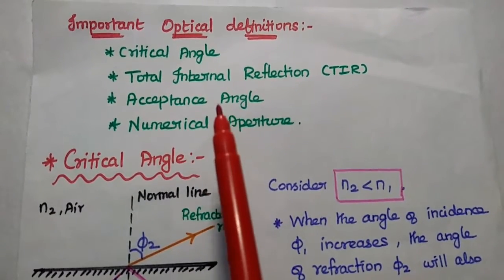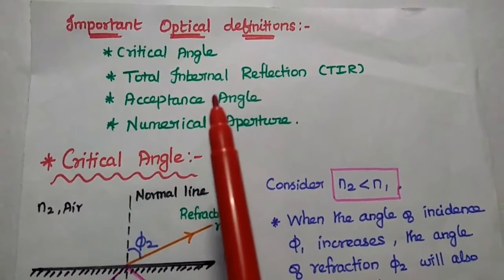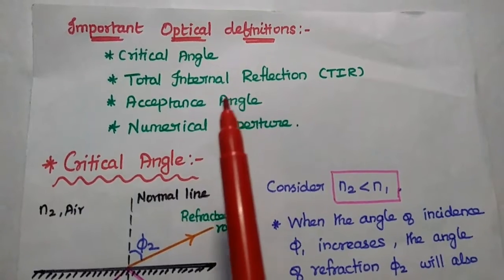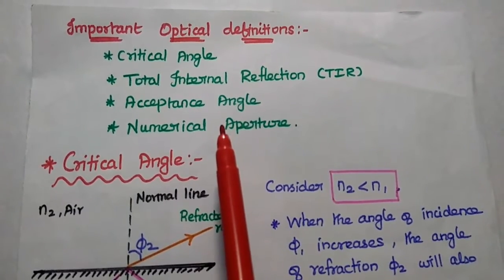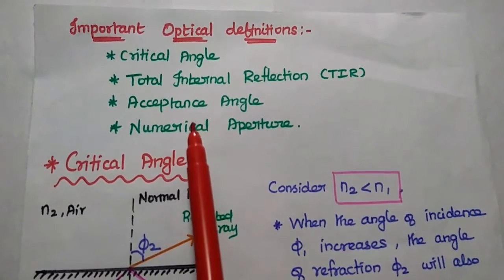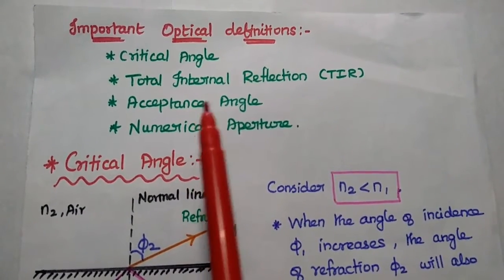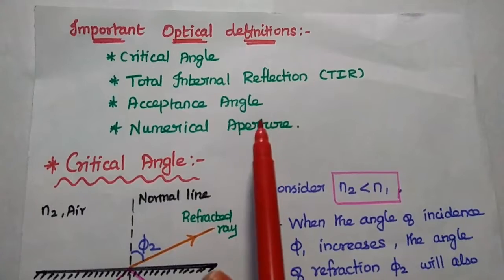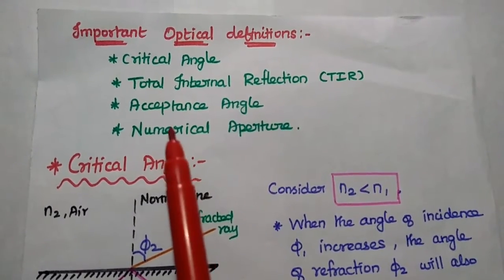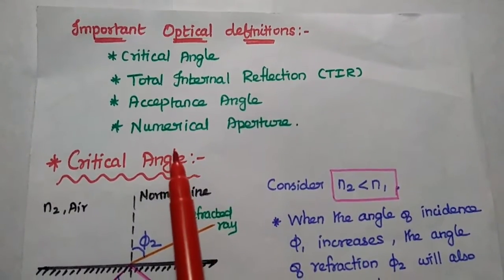Now we are going to discuss important optical parameters in this lecture video: critical angle, total internal reflection, acceptance angle, and numerical aperture.